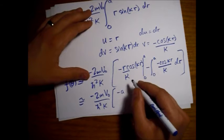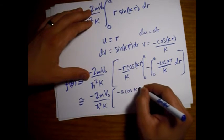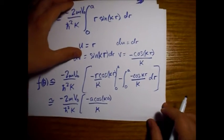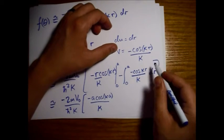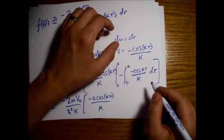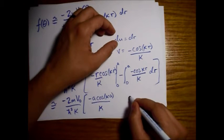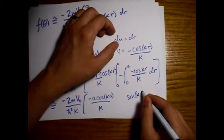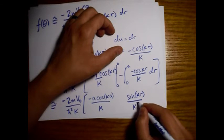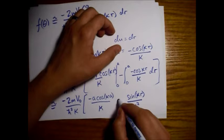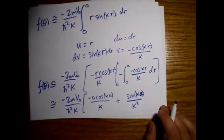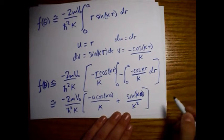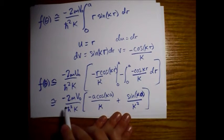So we get minus A cosine of kappa A — that takes care of that part — and then we end up with a sine of kappa r term, with kappa squared on the bottom. Since sine of zero is zero, we just evaluate at the upper limit A.